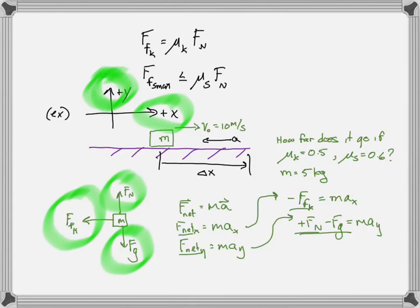Now for the right-hand side: ax is unknown — the book is accelerating in the minus x direction, but let's leave it as unknown. ay is zero because the book isn't jumping off the table; the acceleration is along the x axis. There could be situations where we're not sure — like if I were pulling with a rope hard enough to lift it — but here ay = 0.